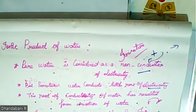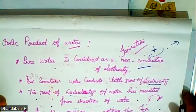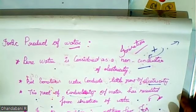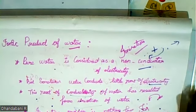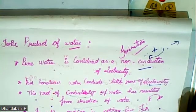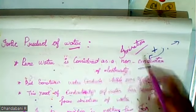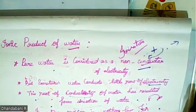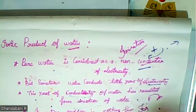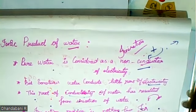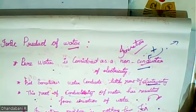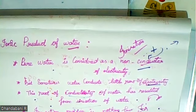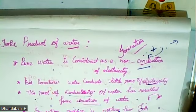Ionic product of water: water is a non-conductor. Water does not conduct electricity. Pure water is considered as a non-conductor — it does not conduct electricity. But sometimes water conducts a little part of electricity. This part of conductivity of water has resulted from the ionization of water.